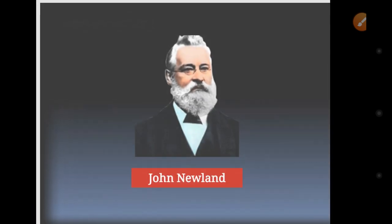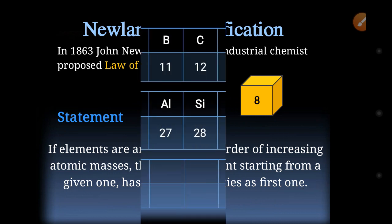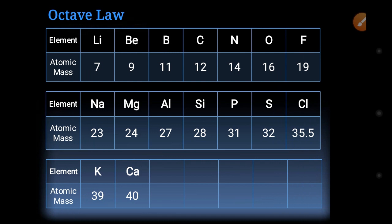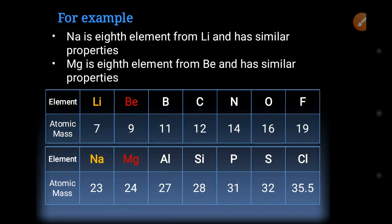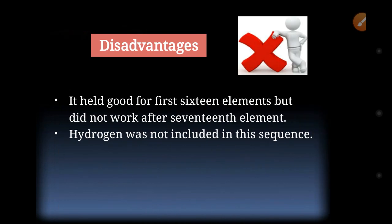The next scientist was John Newland, who presented his law in 1863, known as the Law of Octaves. He arranged 16 known elements and considered that every eighth element has similar properties to the first element. His law failed because it was applicable only to the initial elements and he didn't include hydrogen in his sequence.